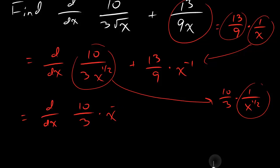Whoa, whoa, wait. Look it janky. X to the negative one half. There. Love it. And then the other guy, I'm going to keep the same. Thirteen over nine, x to the negative one.